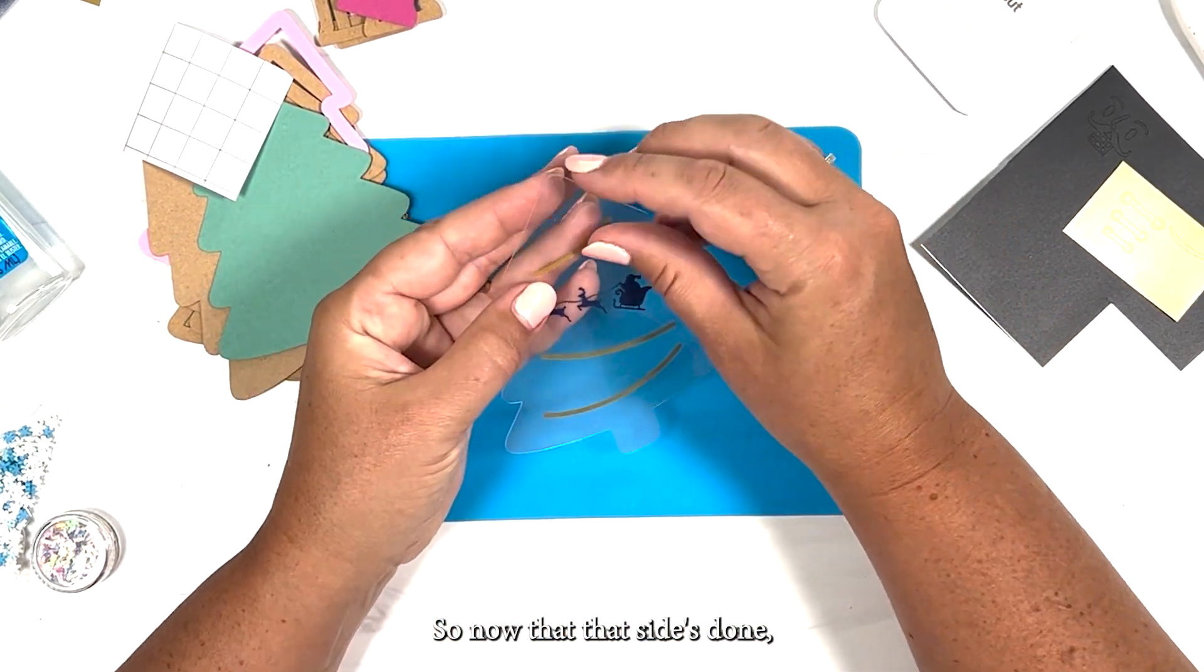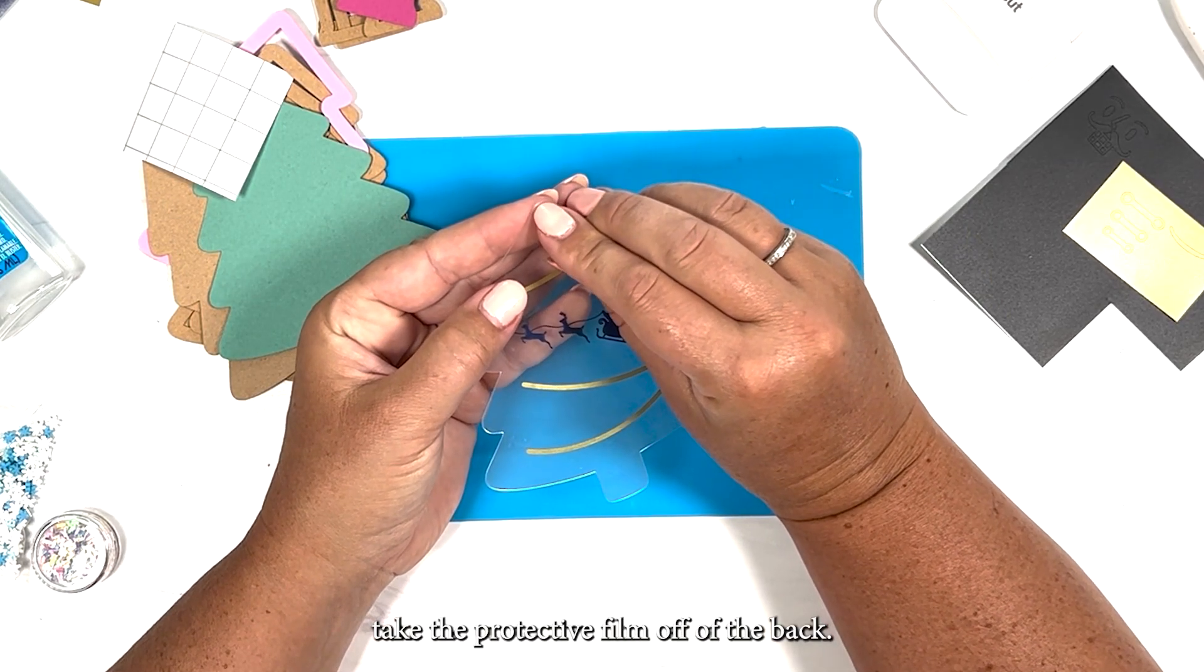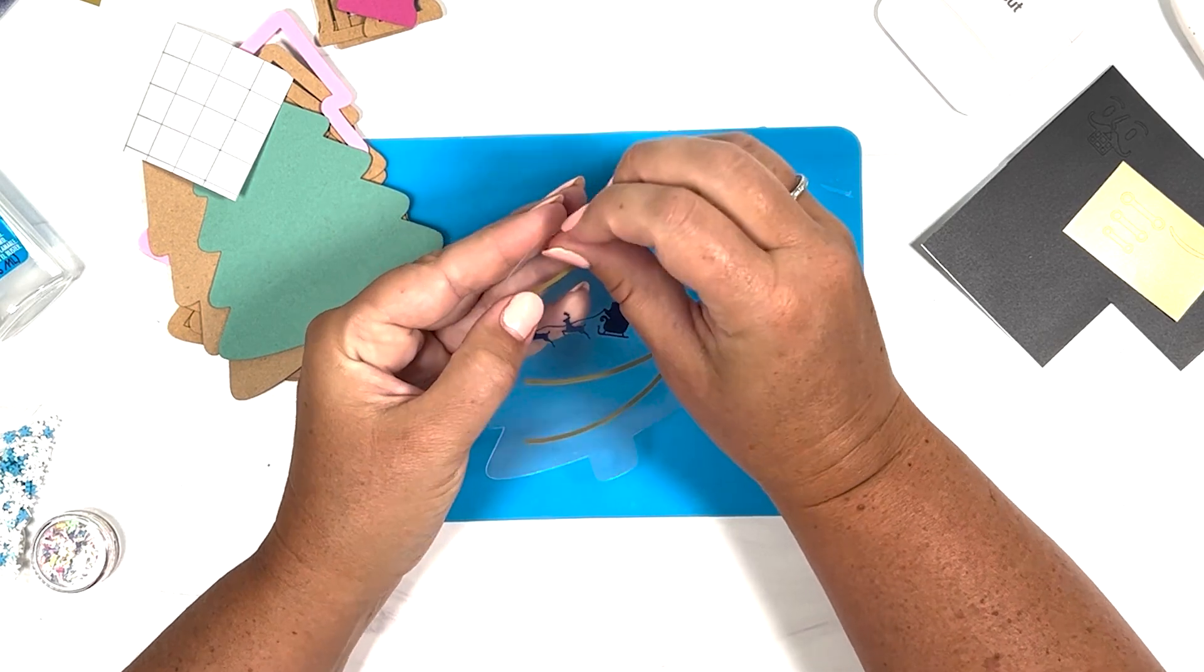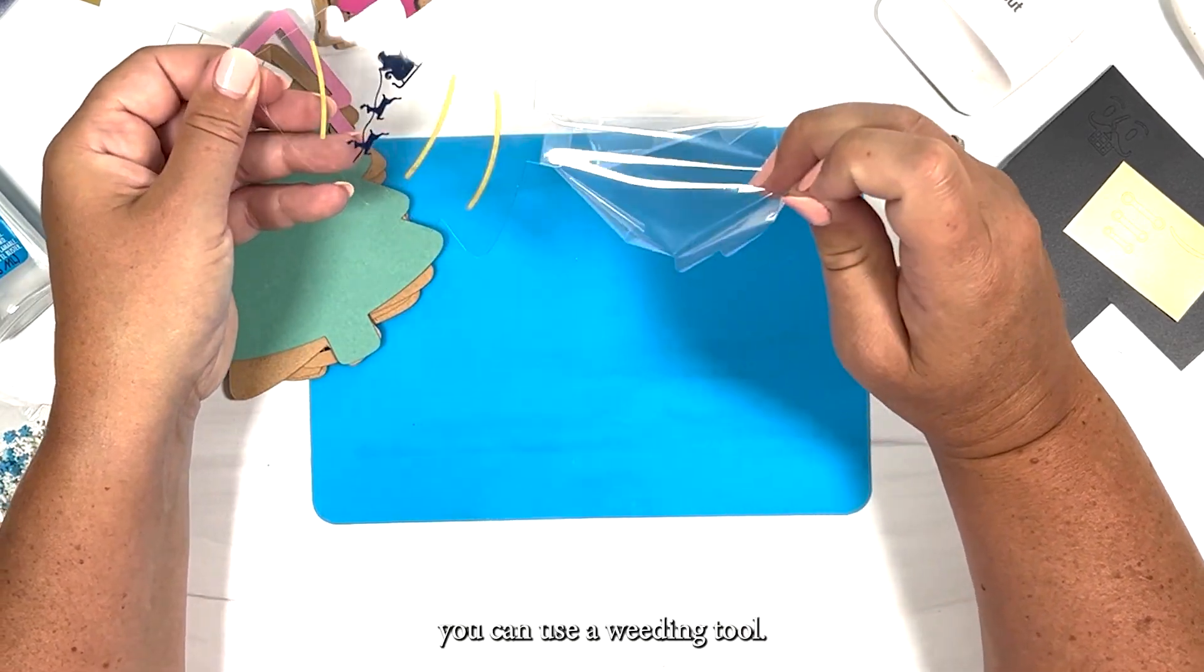So now that that side's done, I'm going to go back in and I'm going to take the protective film off of the back. I either use my fingernails or if you can't grab it you can use a weeding tool.